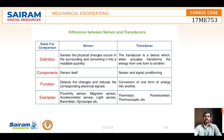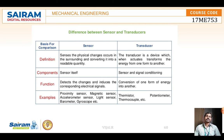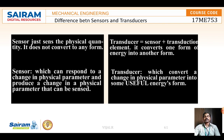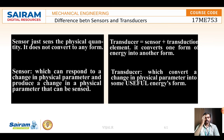Now the difference between sensors and transducers: a transducer transduces — converts — one form of energy to another form, whereas a sensor just senses the signal and gives a readable output. Examples of sensors include proximity sensors and magnetic sensors; examples of transducers include thermocouples and potentiometers. A sensor just senses the physical quantity, but in a transducer, a sensor is one part — it first senses and then converts one form of energy to another.